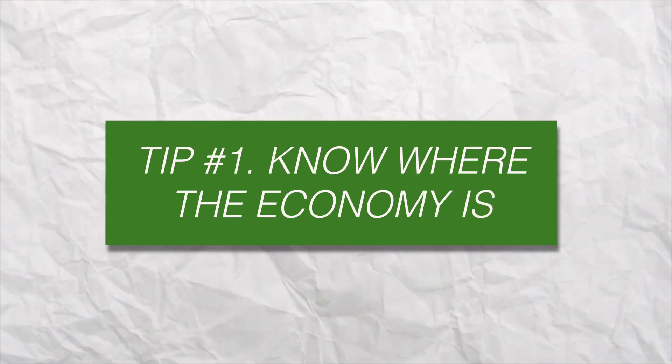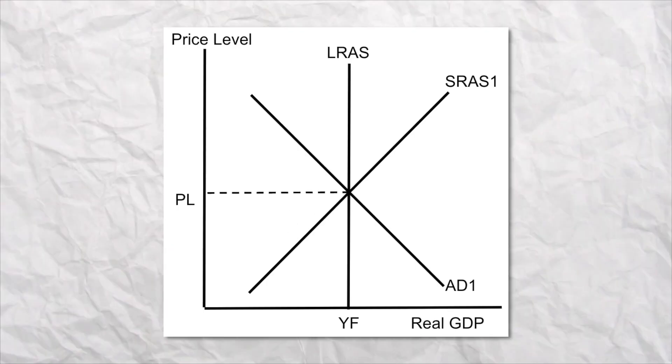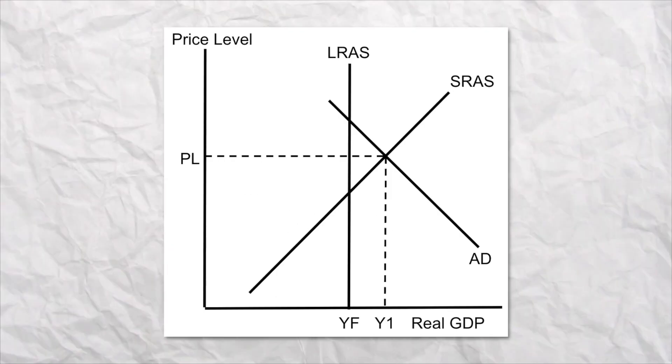Tip number one: know where the economy is. The economy can only be in one of three places. It can have a negative output gap, it can be at full employment, or it can have a positive output gap. So whenever there are questions that have you use or draw aggregate demand and supply, they have to tell you where to start.